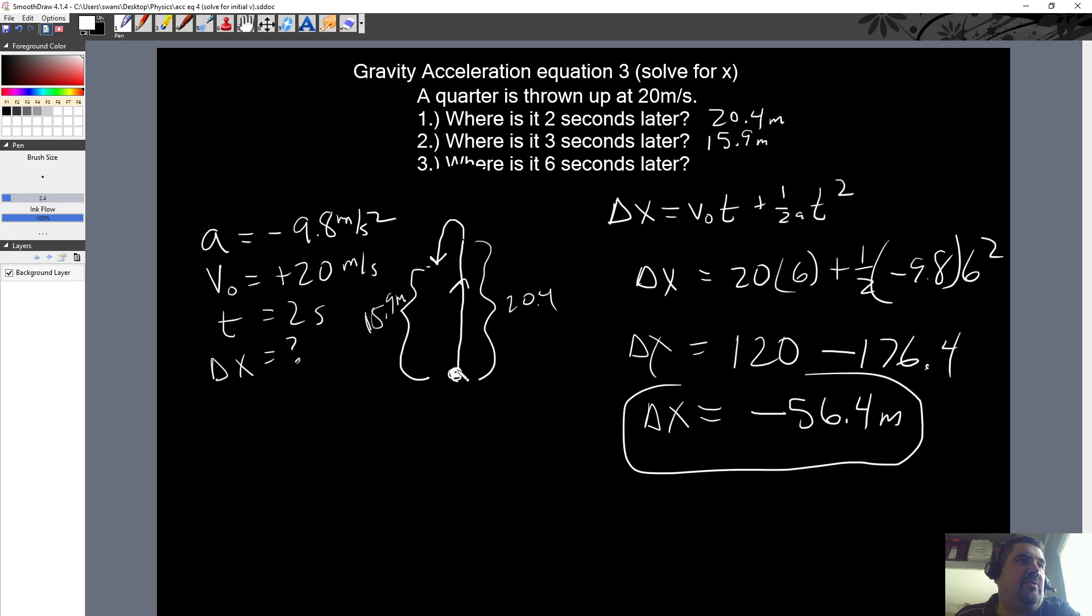So it went, you threw it up right here. And after two seconds it's this high. After three seconds if you wait long enough it's only this high. So it's obviously kind of falling back down because it's only 15.9 meters high. But if you wait a whole six seconds from when you threw it up, it must have went up, down, and came past where you went, if it's possible, which is possible. You could be standing on a cliff or something and threw it up and it came back down. Because at this point it is negative, it is below you, negative 56.4 meters.